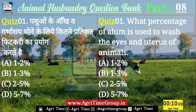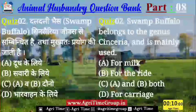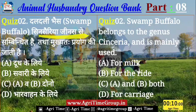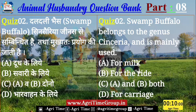Question number 2 — यह रहा आपके screen पर। दलदली भैंस, यानि कि Swamp Buffalo, जिसका Bubalus Sincerus genus है — यह मुख्यतः प्रयोग की जाती है किसके purpose से? दूध के लिए, सवारी के लिए, या फिर एवं भी दोनों, या भारवाहन के लिए? तो comment करके बतलाईए — quiz 2 के लिए right answer क्या होगा?